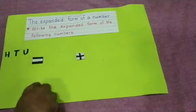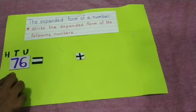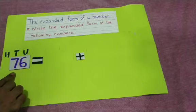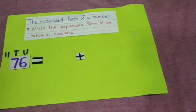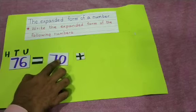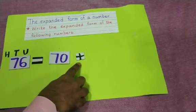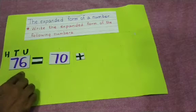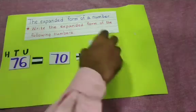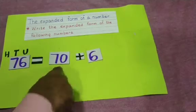Our next number is 76. 76 means, how many tens? 7 tens. 7 tens means what? 7 tens means 70. Units are there, so you have to write the plus sign. How many units are there? 6 units are there. So you have to write 6 here. 76 = 70 + 6.